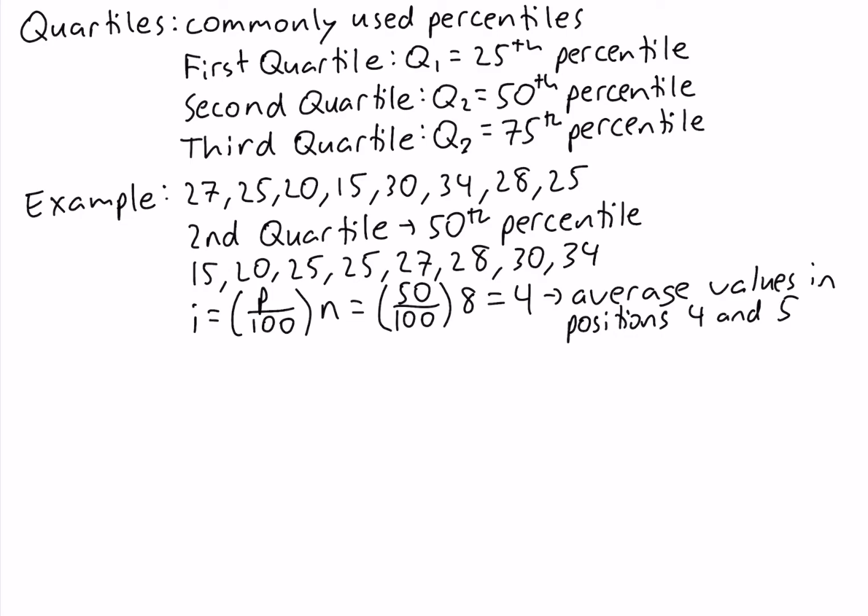When we count the values in ascending order from smallest to largest, the fourth and fifth values are 25 and 27. So our second quartile equals the average of 25 and 27, which equals 26.